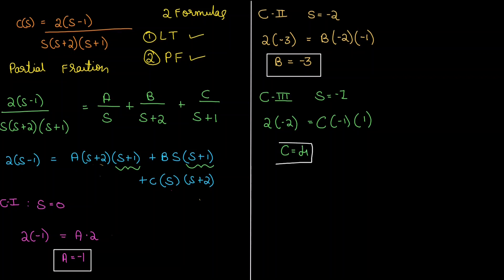So finally we got all the coefficients A, B, and C. Putting them in our equation, C(s) equals minus 1 by s plus minus 3 by (s plus 2) plus 4 by (s plus 1).